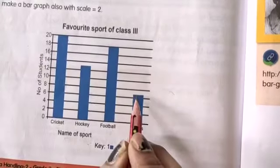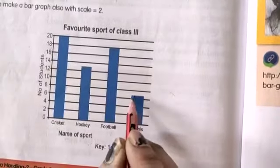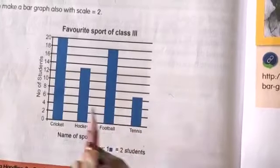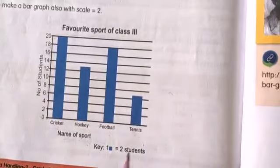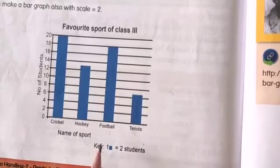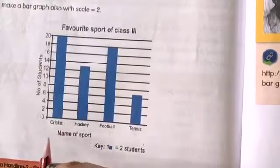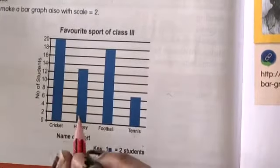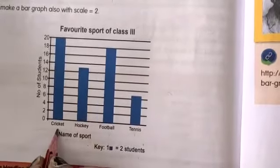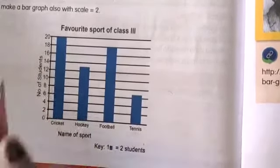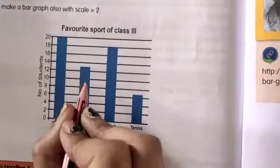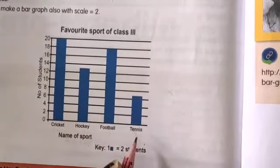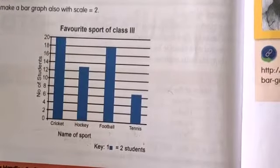And tennis, so here what is the number we are getting? Number of students near 6 and 8, between 6 and 8 we have this bar. Means what? 7 students in the class they like tennis. So children, now what they have done with this information - they have took the cricket, 20 students they like cricket, and 13 students they like hockey, 18 students like football, and 7 students like tennis.